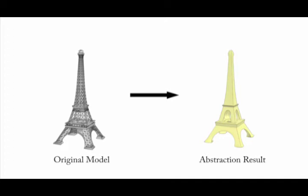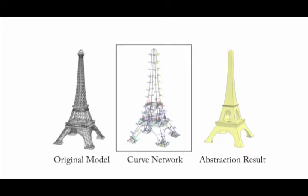We present an algorithm to generate abstractions, or minimalist representations of 3D geometry, specifically focusing on man-made objects. For example, the model of the Eiffel Tower is abstracted using only a handful of curves and normal information along them.